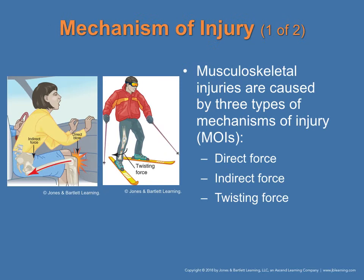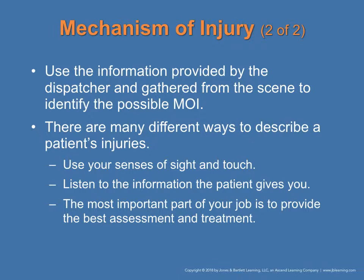Let's discuss mechanism of injury. You can have direct force, indirect force, or twisting force. In an MVA, the knee may take a direct force against an object, and the force travels through the femur, potentially causing a pelvic fracture through indirect force. With twisting force, the sheer force of a twist — without hitting anything — can cause a fracture of the bone.